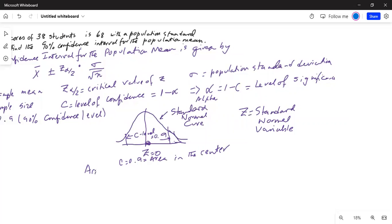Area in two tails, the shaded area, total area under the curve is 1, 1 minus c or 1 minus 0.9 in this case is 0.1. We know 1 minus c is equal to alpha.